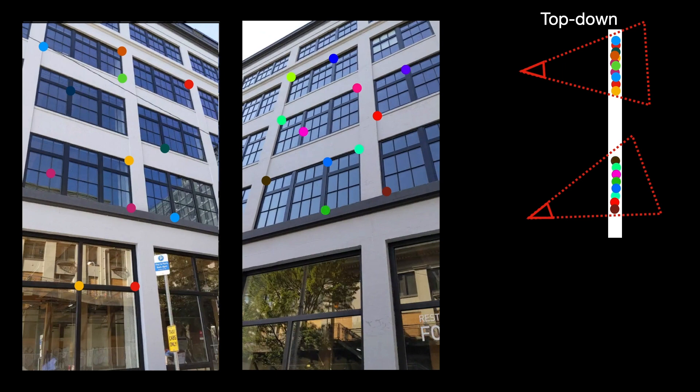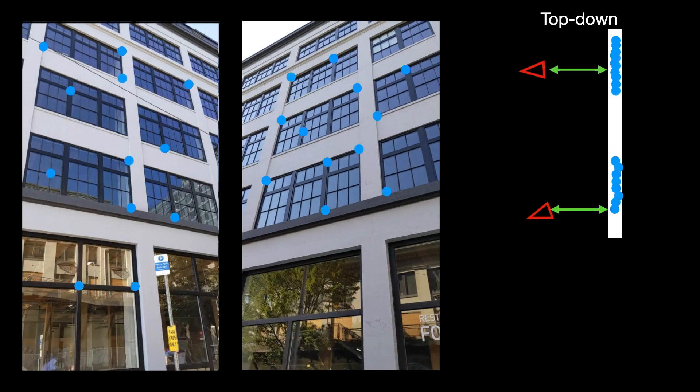However, if we're able to figure out that the feature tracks in these two frames belong to the same global plane, that gives us a very strong constraint on the relative position of these two frames.